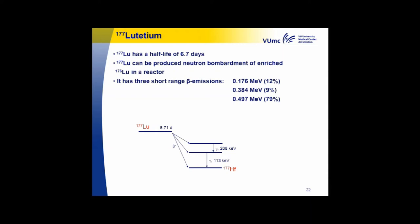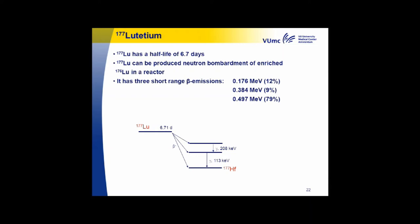The chemistry of lutetium and yttrium is comparable — they both favor the 3+ oxidation state and have similar charge, ionic radius, and coordination chemistry. DOTA is the preferred chelator for these metals, giving more stable complexes than, for instance, DTPA.